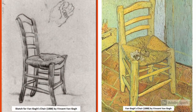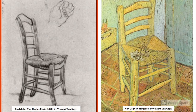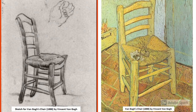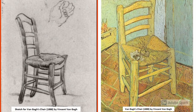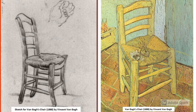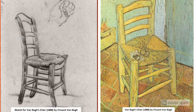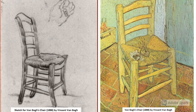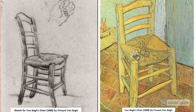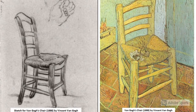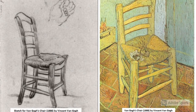Many artists sketch or do a line drawing before they start painting. Here we see a pencil sketch done in 1888 by Vincent Van Gogh of the chair in his room in France. He used this drawing to help him figure out the best way to create the final painting of the chair.